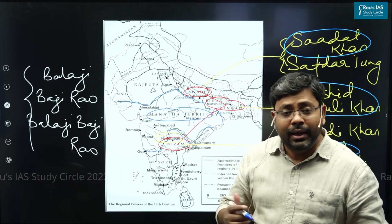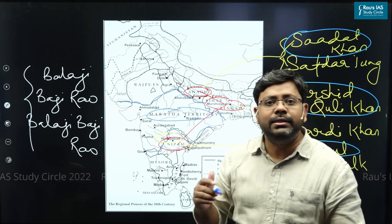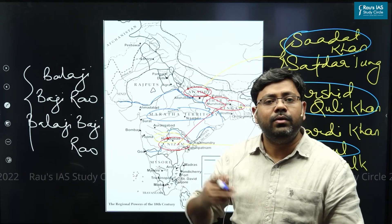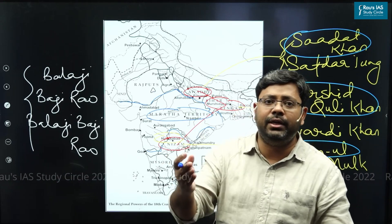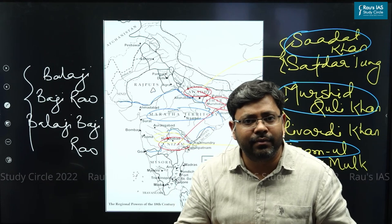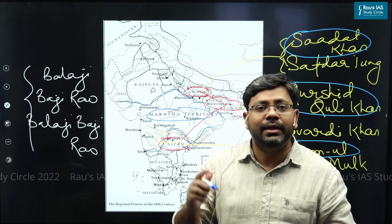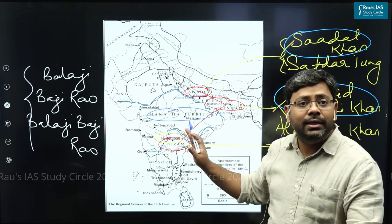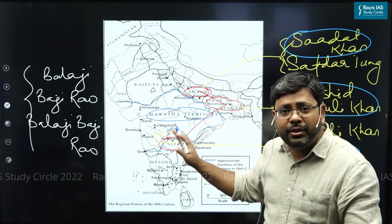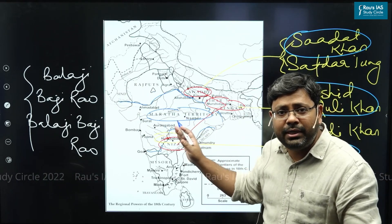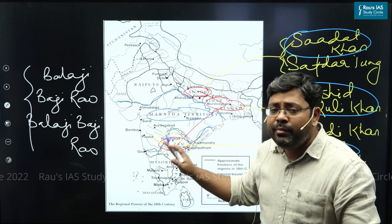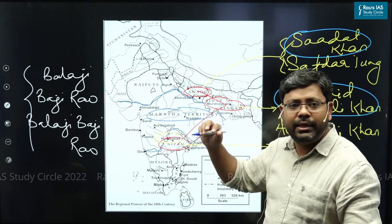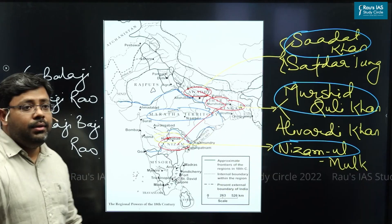The Deccan part of India is known for black soil, which is excellent for cotton cultivation. After the Industrial Revolution in England, cotton was in huge demand because the backbone of that revolution was the textile industry. That is why when the Marathas controlled all these areas, a conflict between the Marathas and the British was inevitable, because the British would look for access to this cotton-producing area controlled by the Marathas.